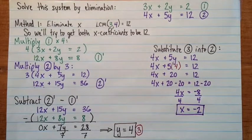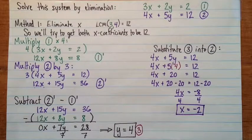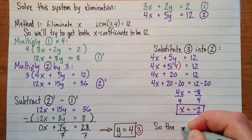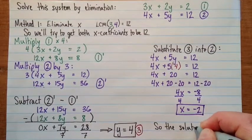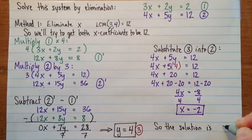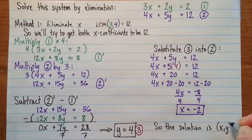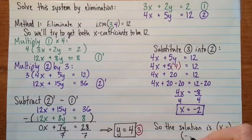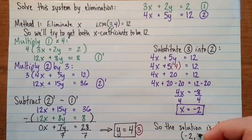Here we go. So we've got the solution. I'll write a concluding statement here. So the solution is xy equals... The x value is negative 2, and the y value is 4.